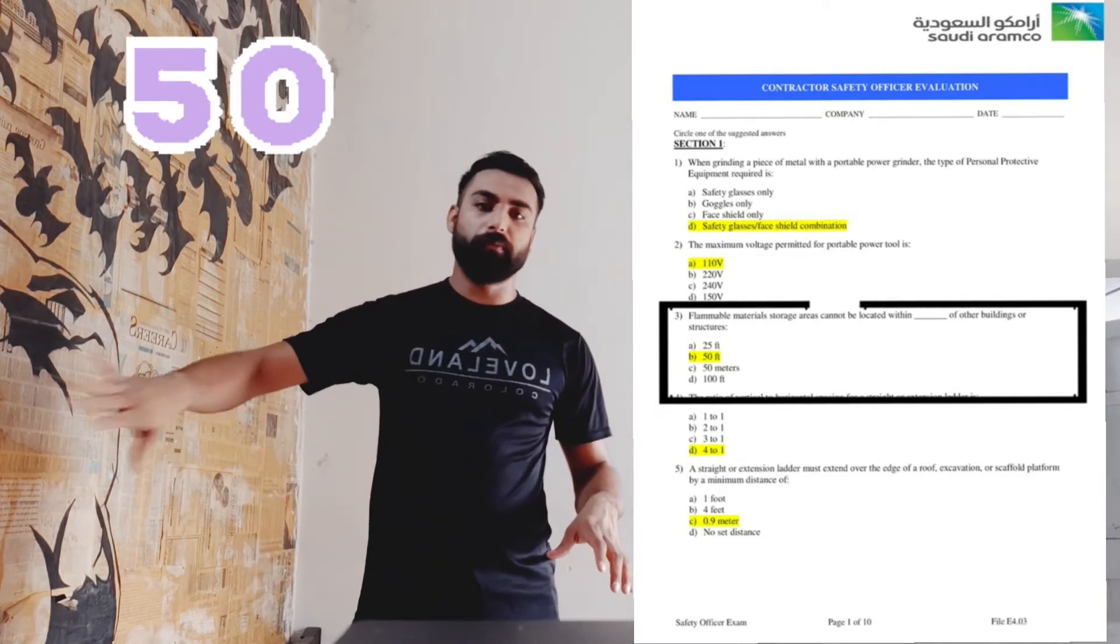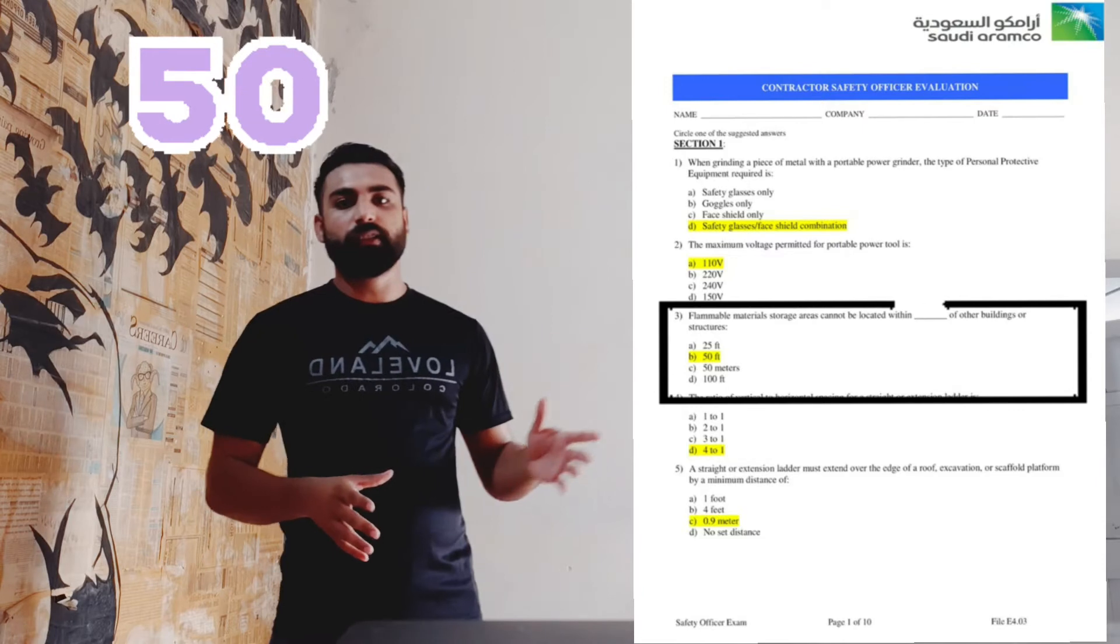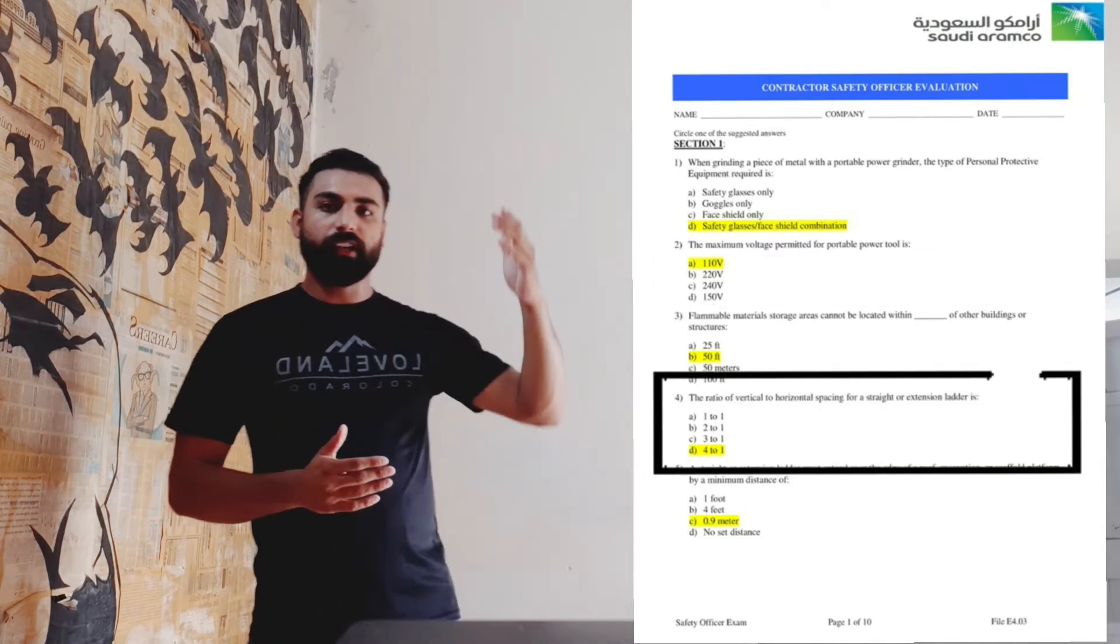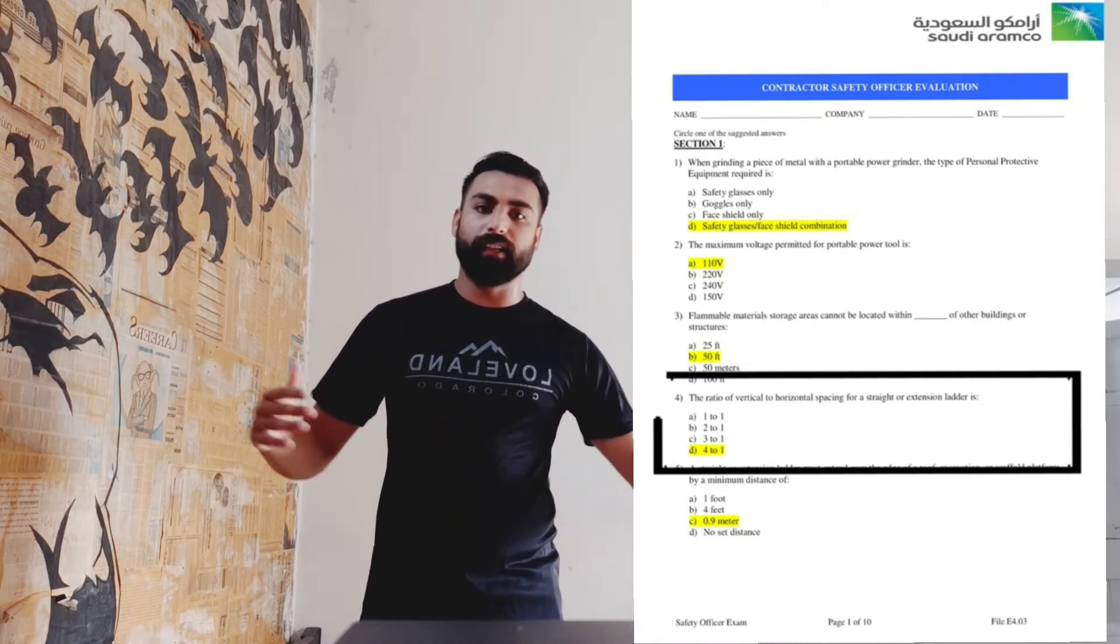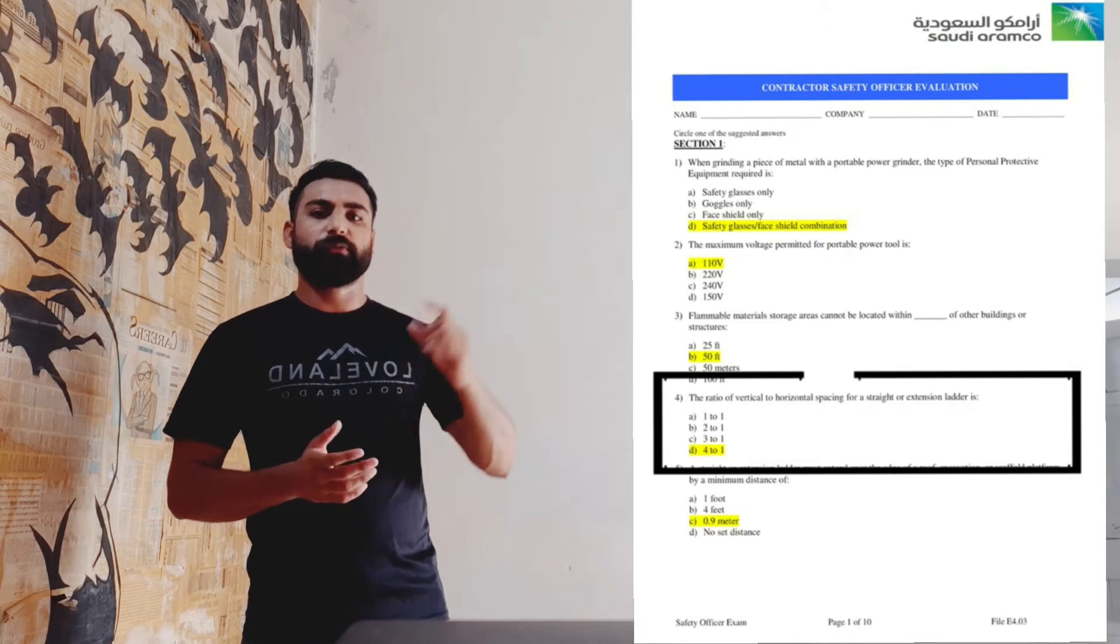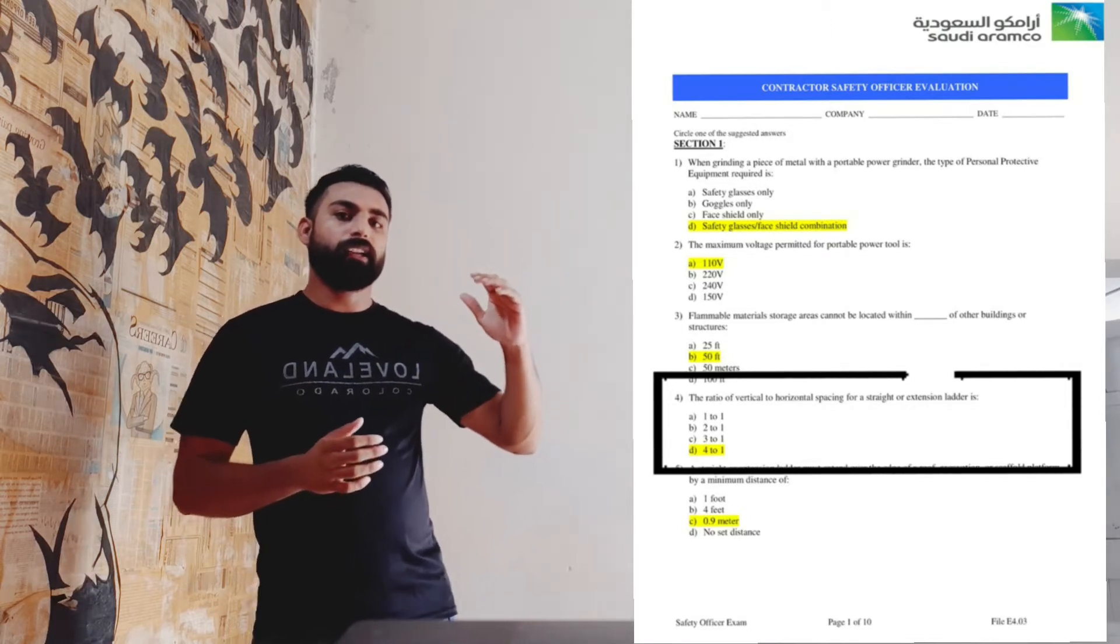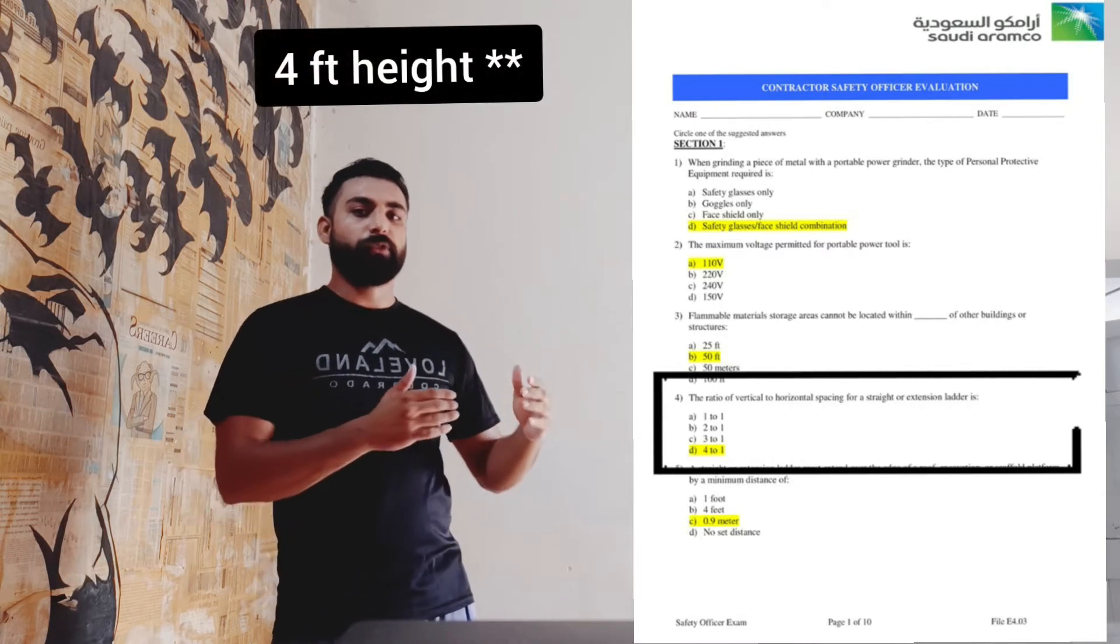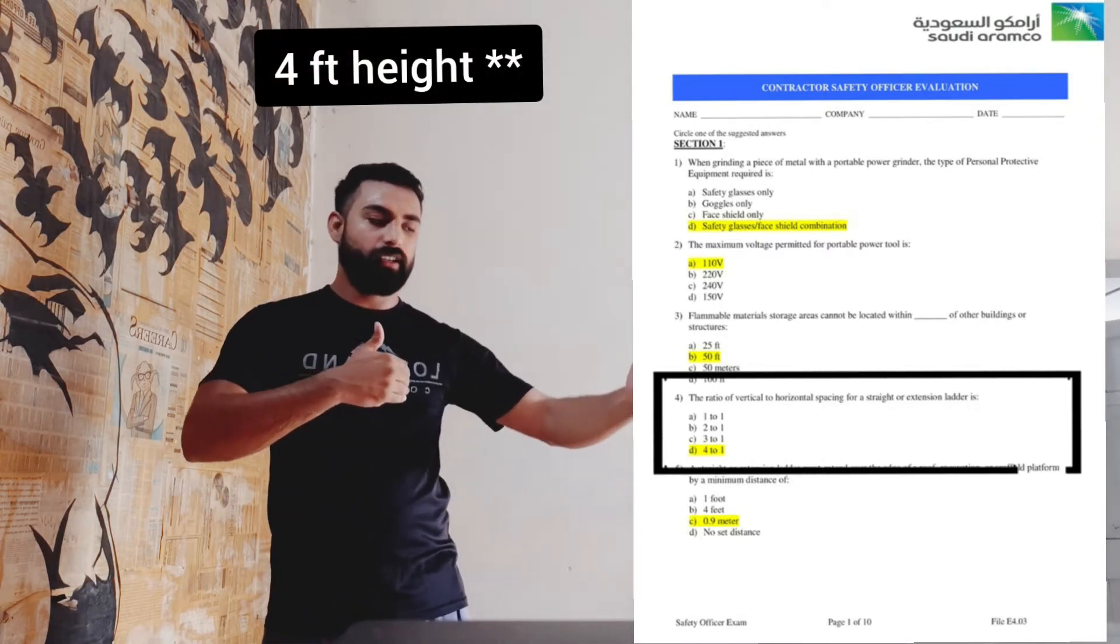Question number four is about the vertical to horizontal spacing between straight ladders, which is mostly used in scaffolding as well. It would be a 4:1 ratio, like if we are having ten feet of height, it would be one foot away from the wall, so it will make a 75-degree angle.